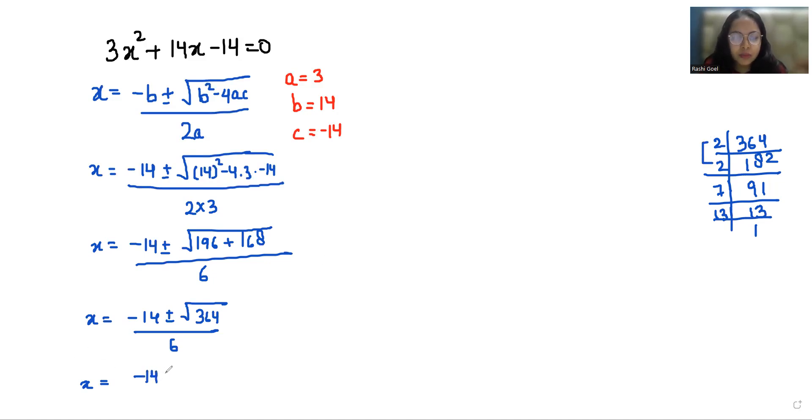So negative 14 plus minus 2 under root 7 times 13 is 91, by 6. Now if I take 2 common from the numerator, minus 7 plus minus under root 91 by 6. We can cancel out with 3. So x1 is minus 7 plus square root of 91 by 3, and x2 is minus 7 minus square root of 91 by 3.